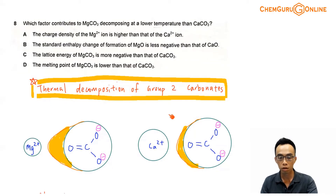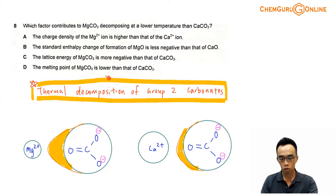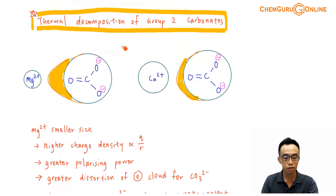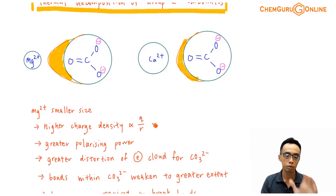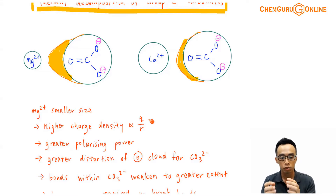Now involving thermal decomposition of group 2 carbonates, the focus will be on the charge density of your metal cation. Each metal cation has a certain charge density depending on the size and the charge. Charge density is linked to this expression: charge divided by size. The bigger the charge and the smaller the size, the higher the charge density.